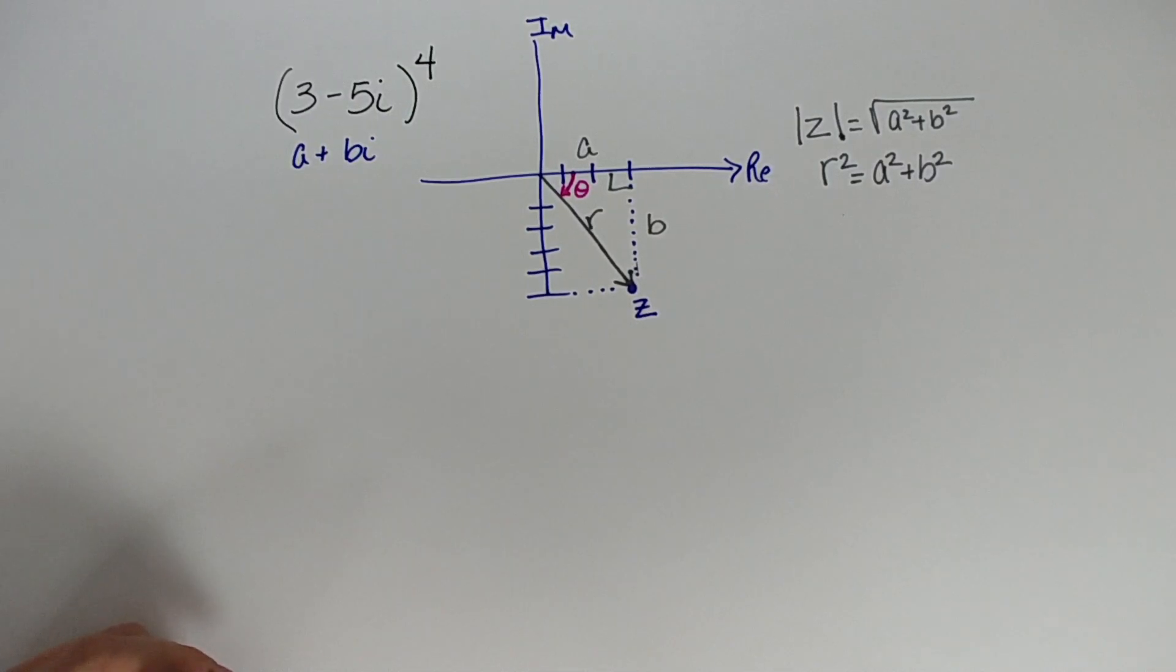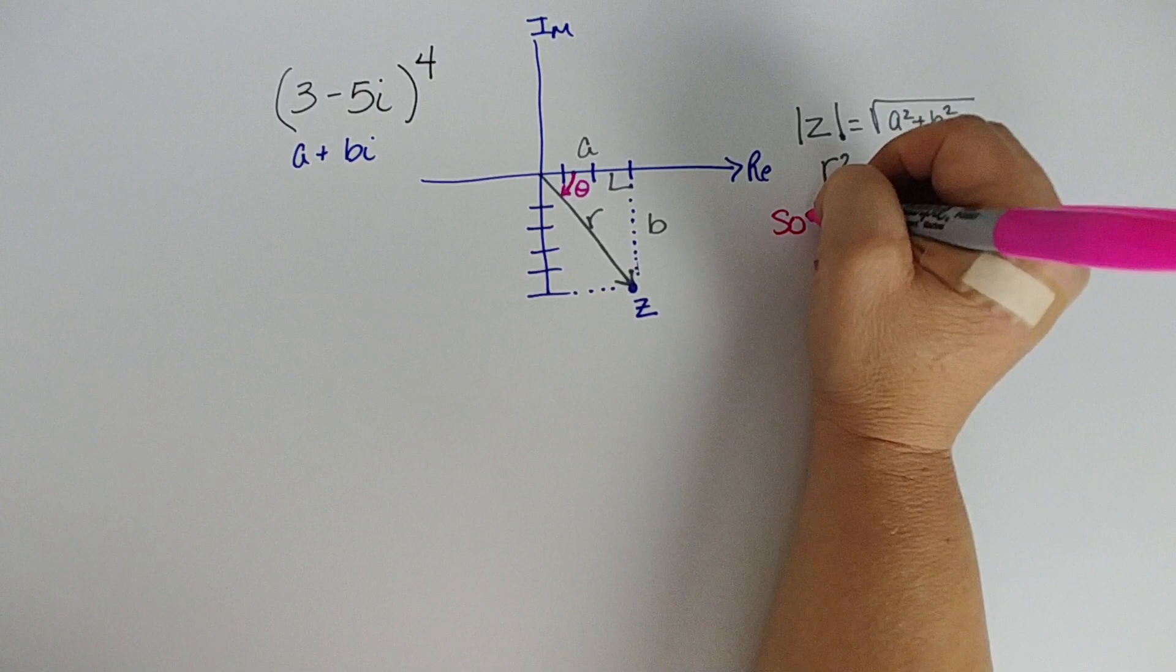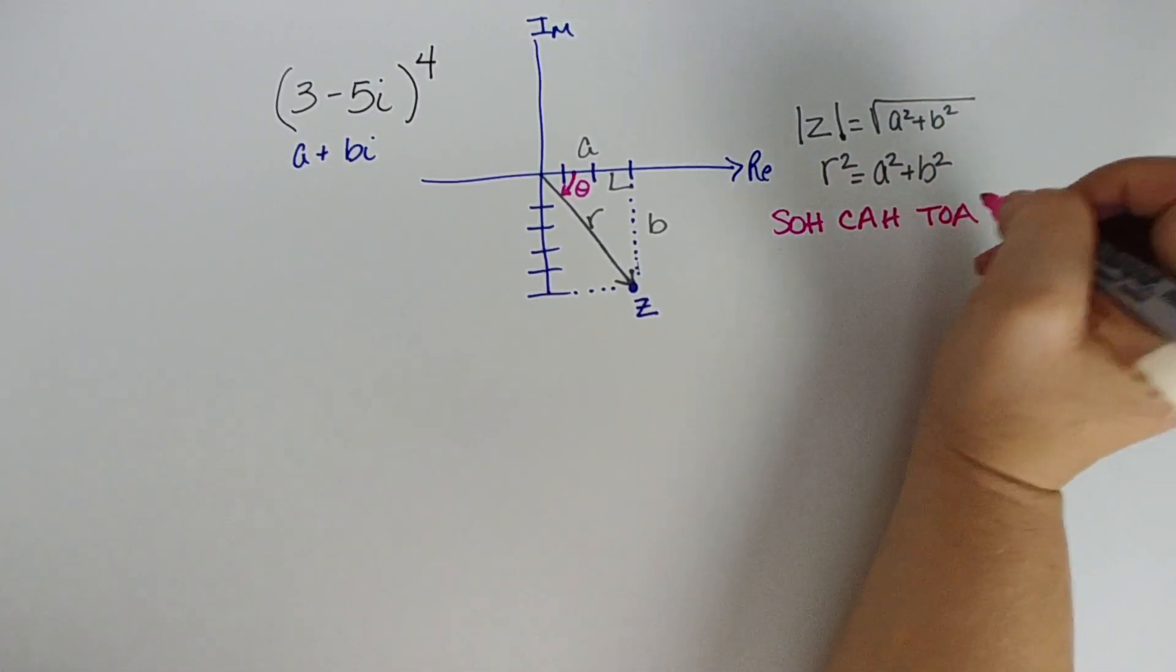We can find that. We know we have a right triangle. We know angles involve SOHCAHTOA, right? Sine, cosine, and tangent. That's not going to go away. So let's start looking at some of our relationships. Let's talk about what theta is going to be. If we have SOHCAHTOA, I still write it down.